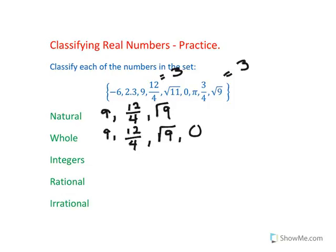Integers are whole numbers plus their opposites. So we have 9, and let's see, we have a negative 6 in here.